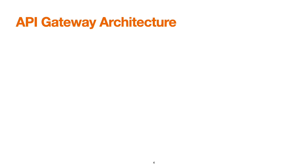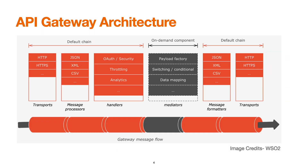Looking at the API Gateway Architecture, it contains several components at several stages. We have a default chain, an on-demand component, and a default chain again. Post token validation by the gateway, for JWT-based tokens, the API Gateway acts upon the API request before sending it to the backend service. It first processes the message to a pre-configured format such as XML, JSON, or CSV.